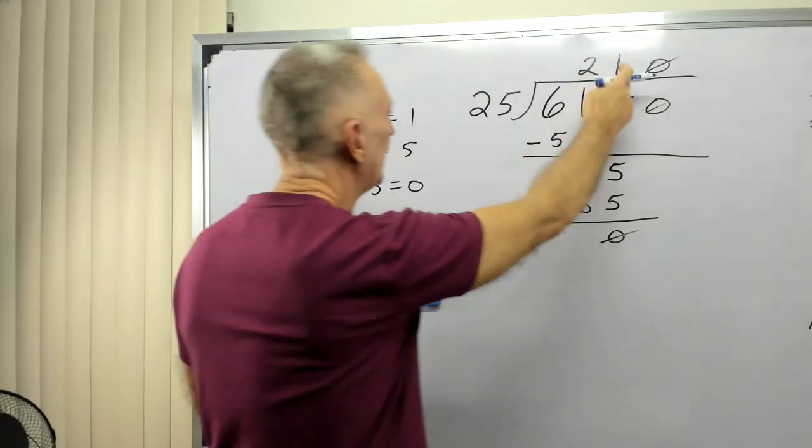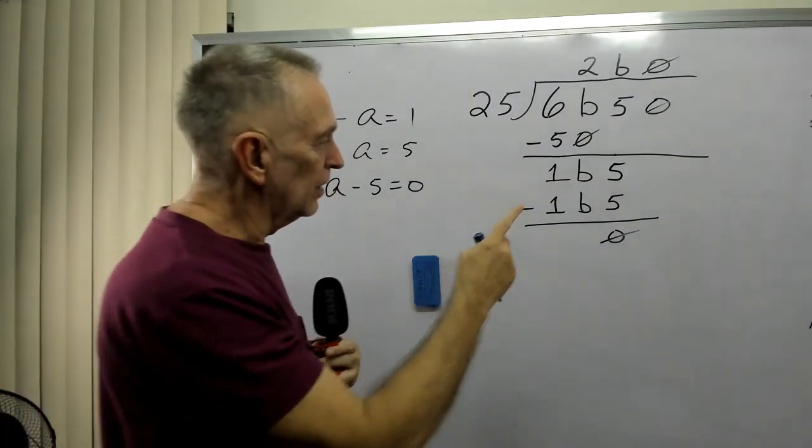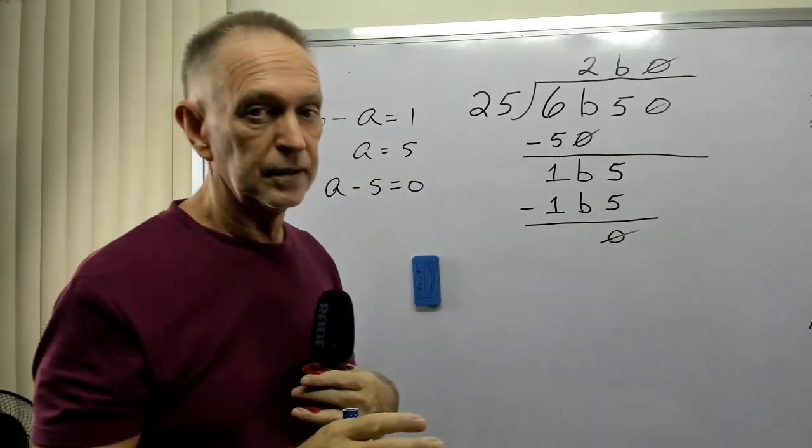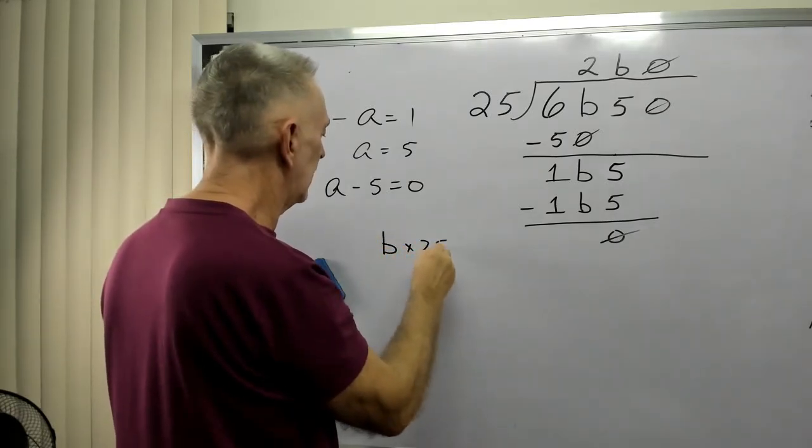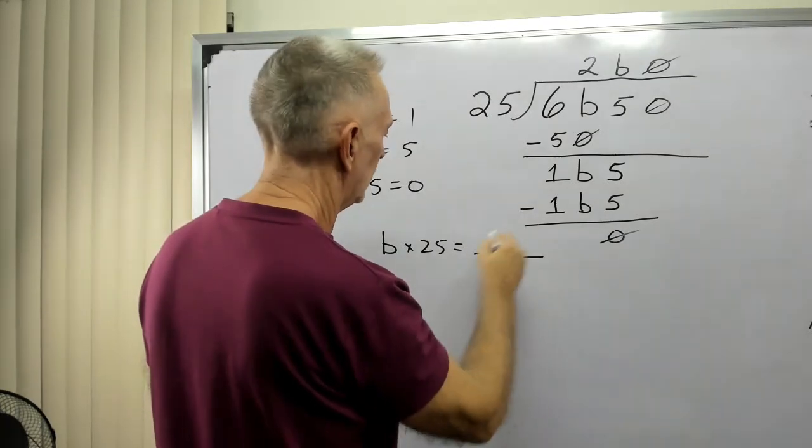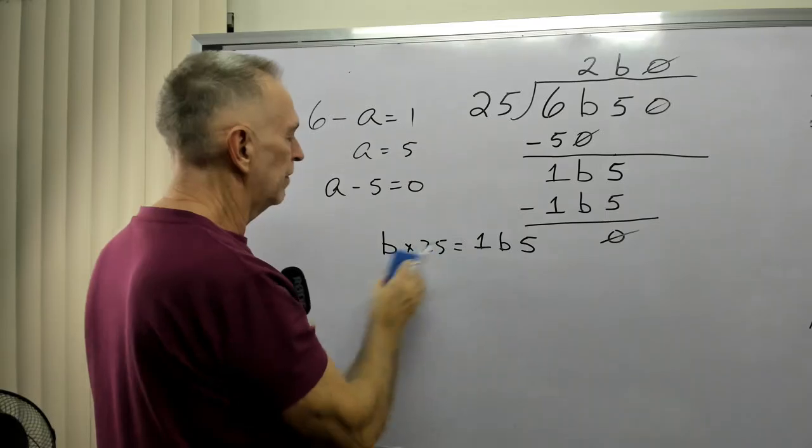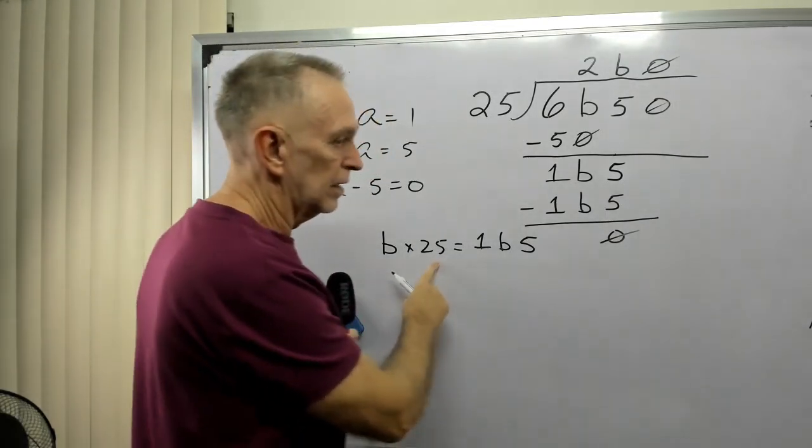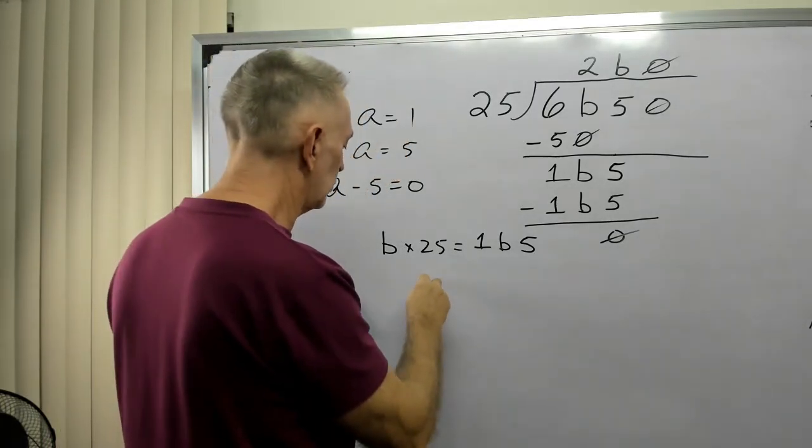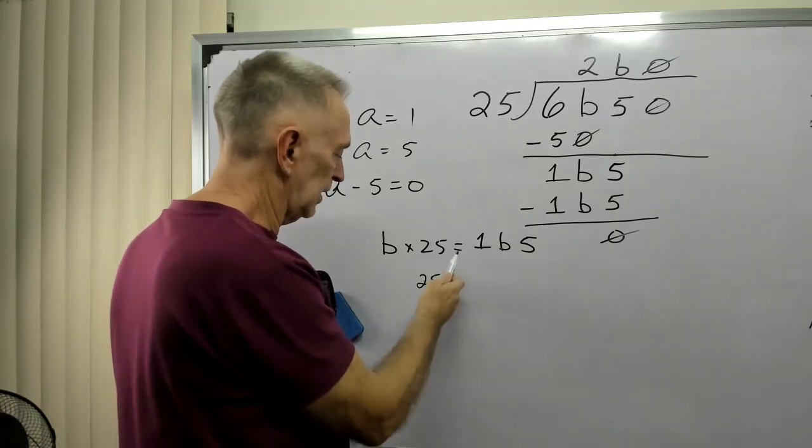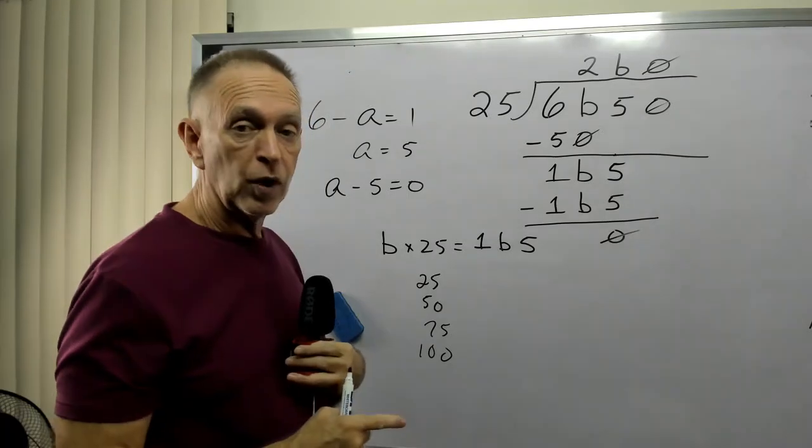Now then, we have B times 25 has to equal a three-digit number. And the last digit is odd. Let's think about that. B times 25 equals a three-digit number. Well, this digit is 1. This digit is B. And this digit is 5. And this number has to be a multiple of 25. 25 times 1 is 25. 25 times 2 is 50. 3 times 25 is 75. 4 times 25 is 100.